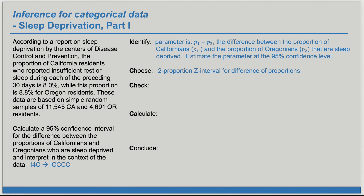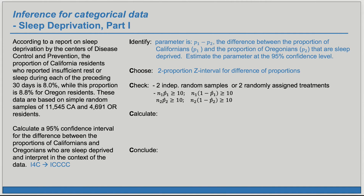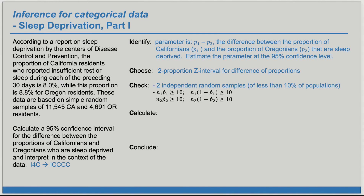Next, we want to check that the conditions for this confidence interval procedure are satisfied. We need either two independent random samples or two randomly assigned treatments, and we need the success-failure condition for both groups — all four terms must be greater than or equal to 10. For the first condition, we do have two independent random samples taken from distinct states, so they're independent of each other, and clearly the sample sizes are less than 10% of the overall population sizes. Plugging in our sample sizes and sample proportions, we can see that all of these values are greater than or equal to 10.